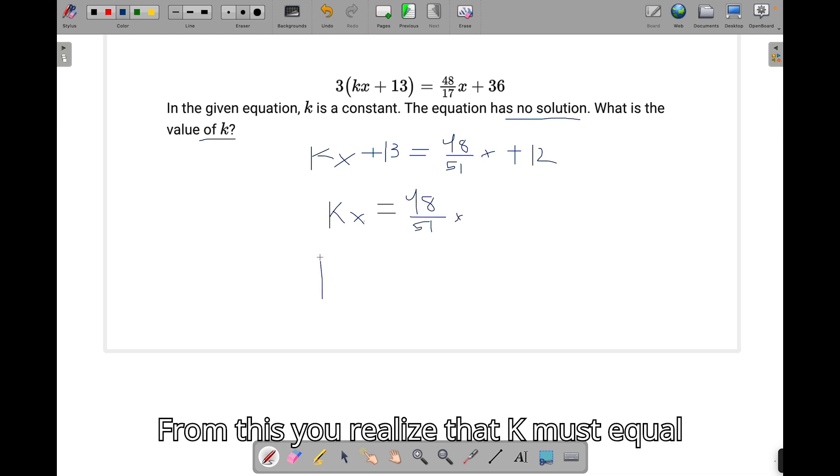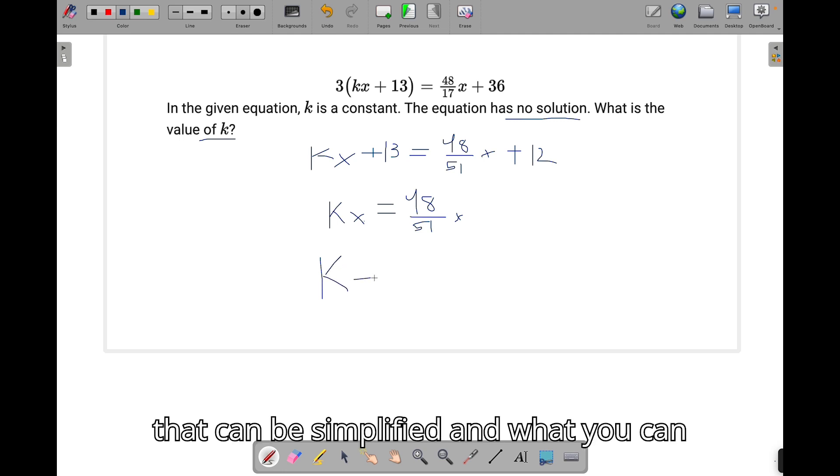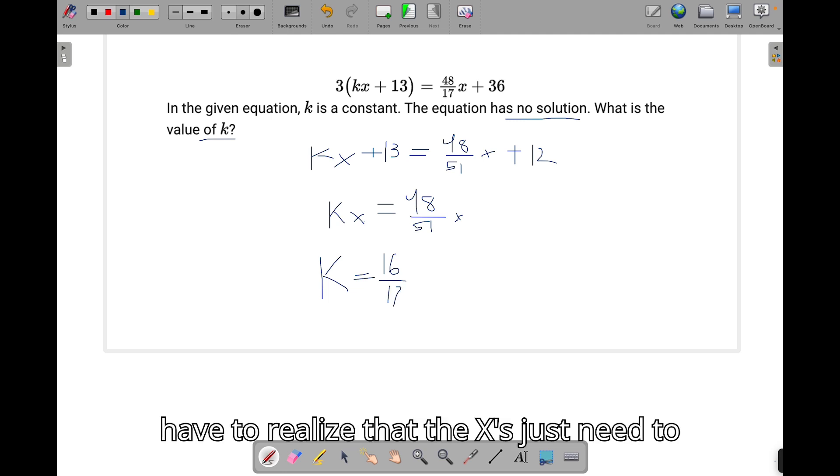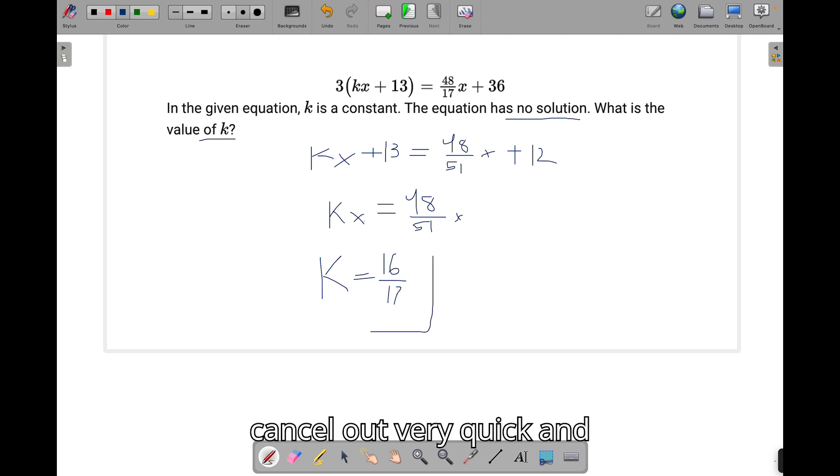From this, you realize that k must equal our 41 over 58, but that can be simplified. And what you can simplify that down to is actually 16 over 17, since they have 3 in common. And that's all you have to do. You just have to realize that the x's just need to cancel out. Very quick and easy.